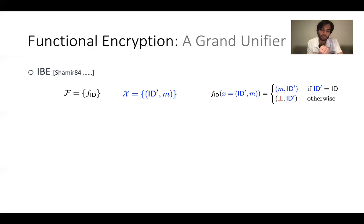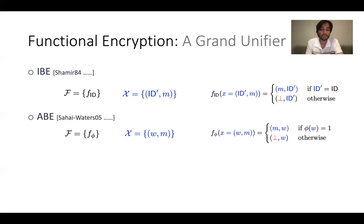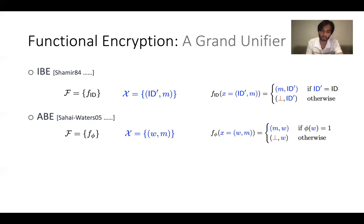IBE can be captured by function encryption via the simple equality check class. Similarly, we can capture attribute-based encryption, which is a much more fine-grained access control system, by using appropriate function classes. And there are so many more encryption concepts that are special cases of function encryption.